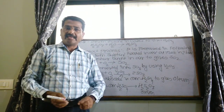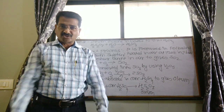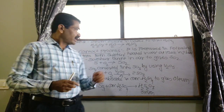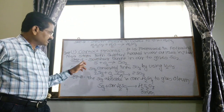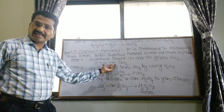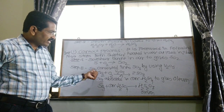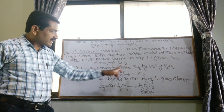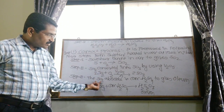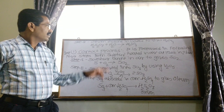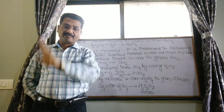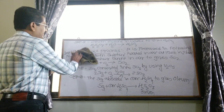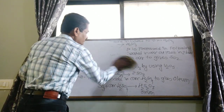So these are the four steps of the contact process for preparation of sulfuric acid: conversion of sulfur to sulfur dioxide, sulfur dioxide to sulfur trioxide using V2O5, sulfur trioxide to oleum by absorption in concentrated H2SO4, and conversion of oleum into sulfuric acid. After that, see the properties of sulfuric acid.